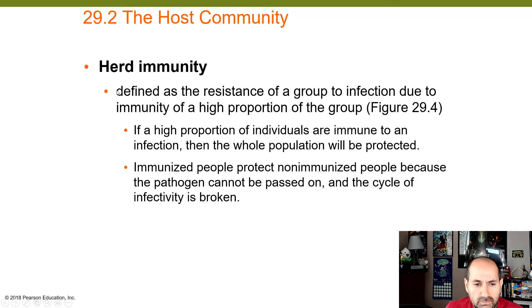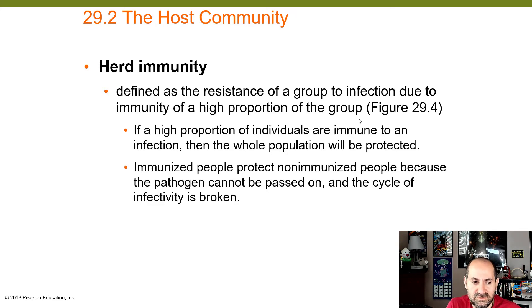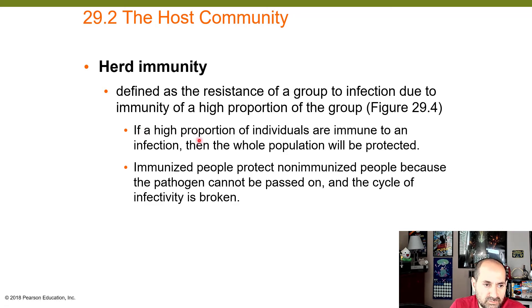Herd immunity is defined as the resistance of a group to infection due to immunity of a high proportion of the group. Usually this means the population around you is highly immune — either through vaccination or having survived and built natural immunity. Typically this requires upwards of 80% of the population to be immune in order to obtain herd immunity, at which point the whole population is protected.